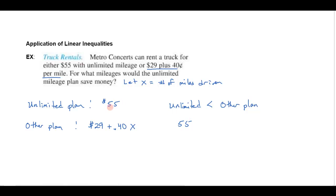So I want to know where is the $55, that is how much the unlimited plan is going to cost me, where is that going to be less than the $29 plus the $0.40x.